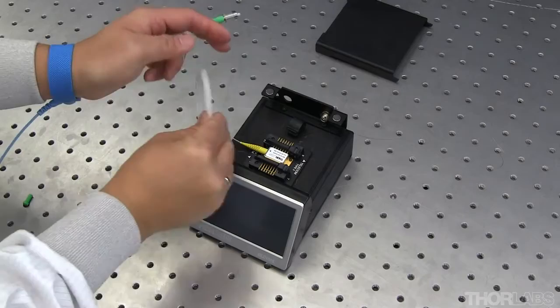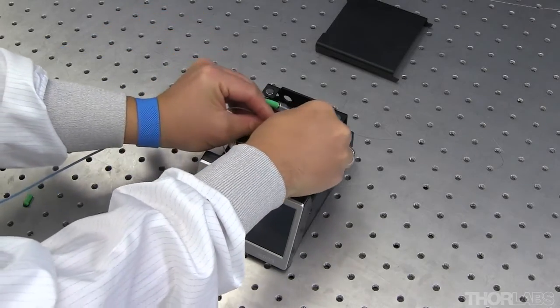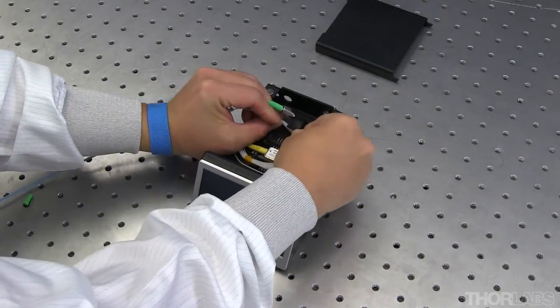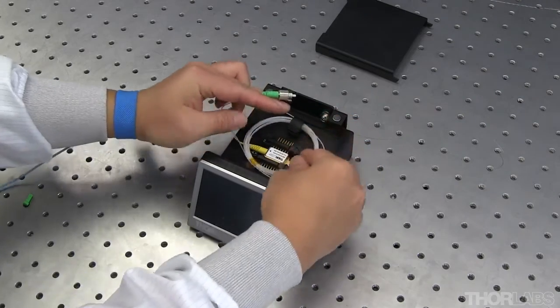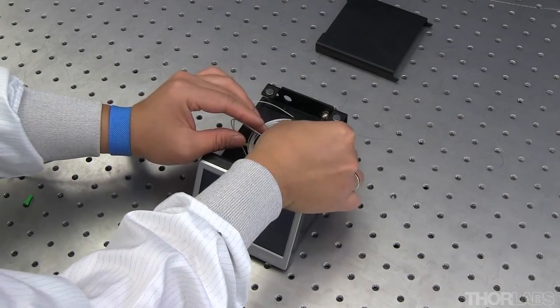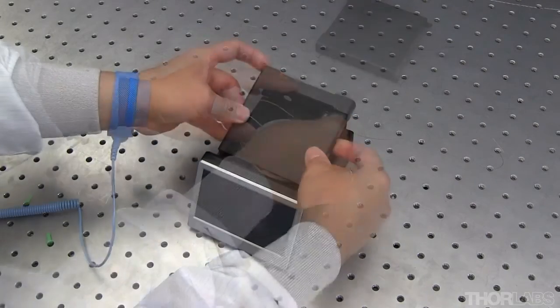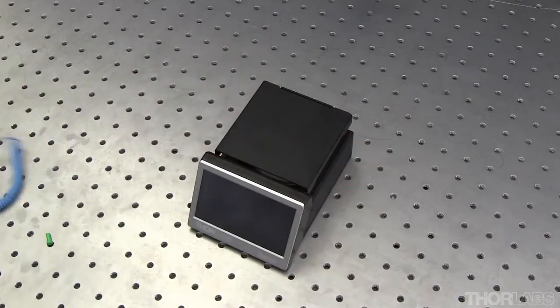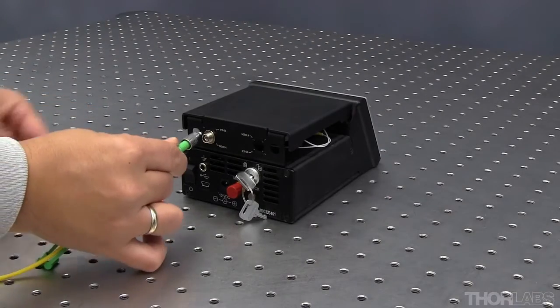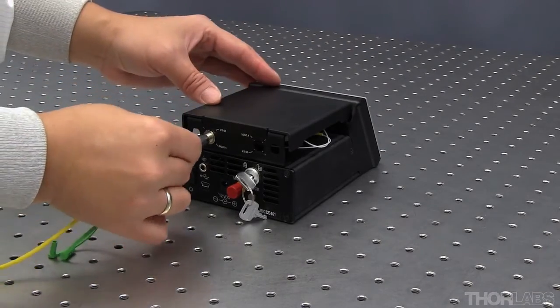Attach the end of the pigtail to the connector on the inside of the controller. This will help prevent any unnecessary stress on the fiber, protecting the laser from damage. Attach the fiber patch cable to the connector on the outside of the controller.